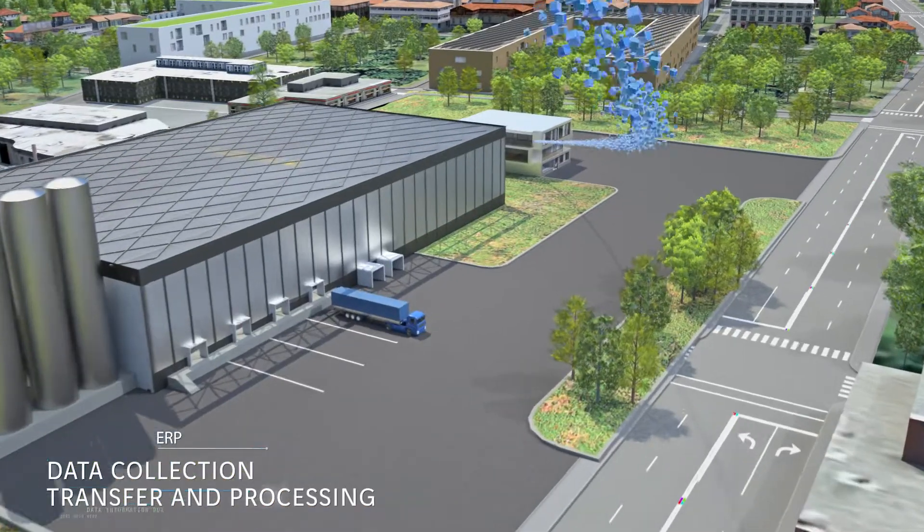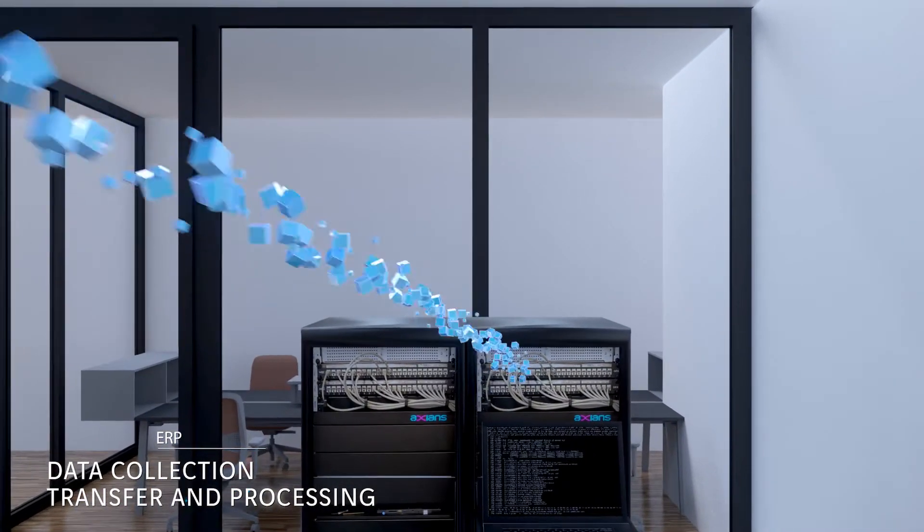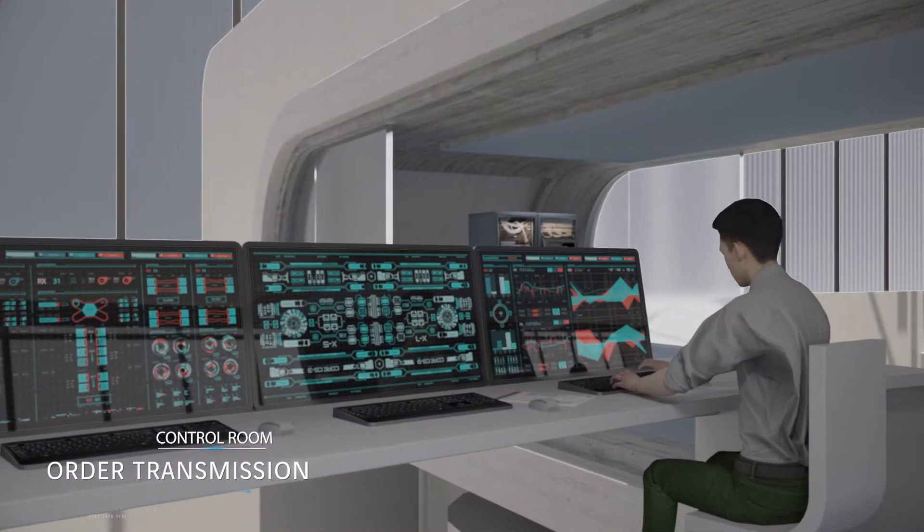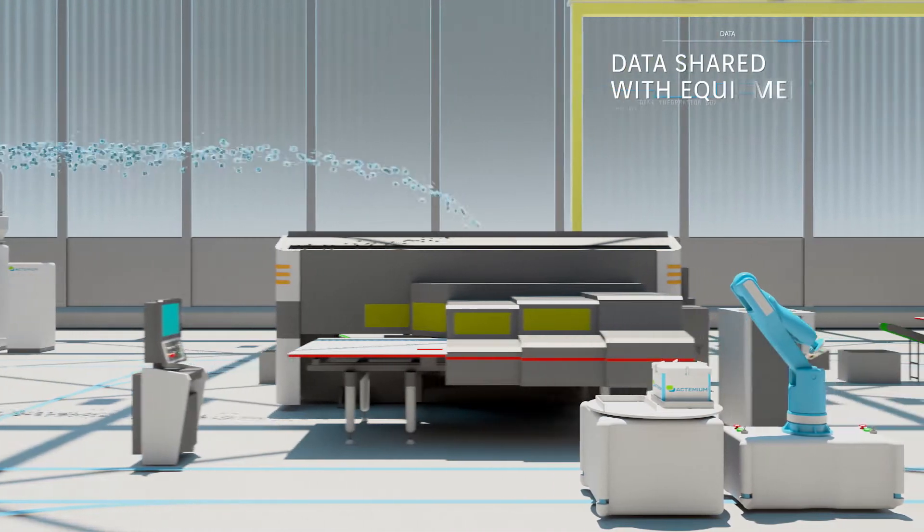Data is collected, transferred and processed. The order to manufacture is sent to the control center before being shared with all the relevant machines in the factory.